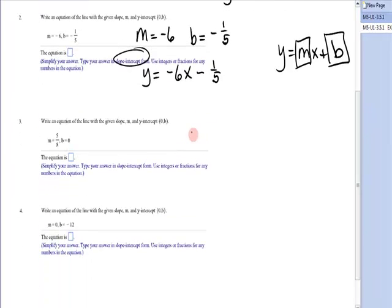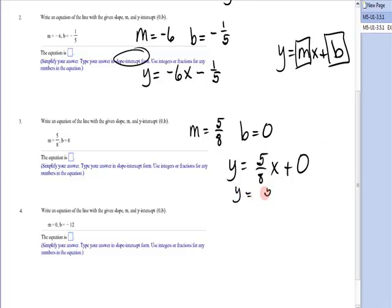Next one, m is equal to 5/8, b is equal to 0. When I plug those in, I get y is equal to 5/8 x plus 0. I usually would not write plus 0, so you will write y is equal to 5/8 x.